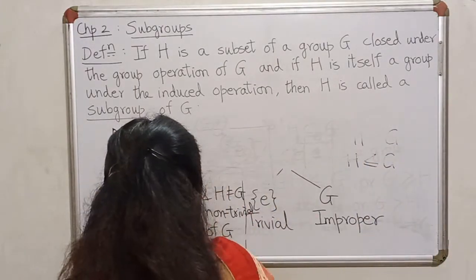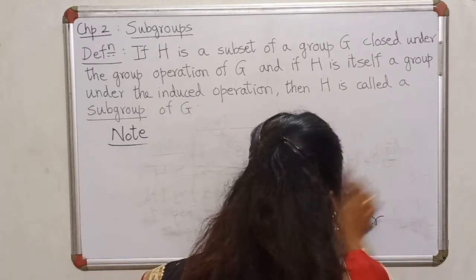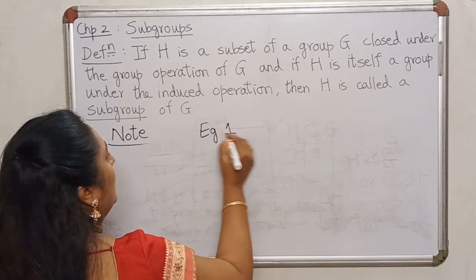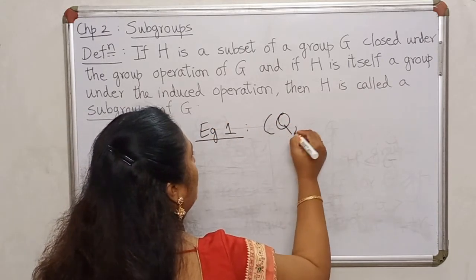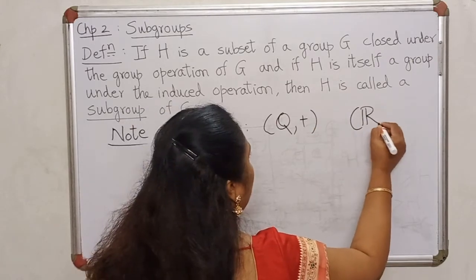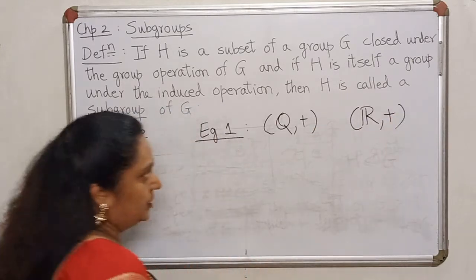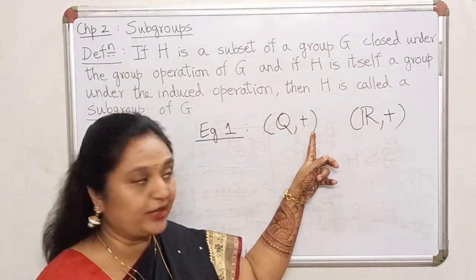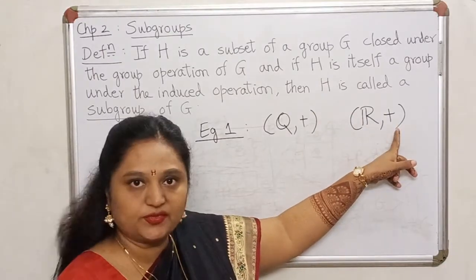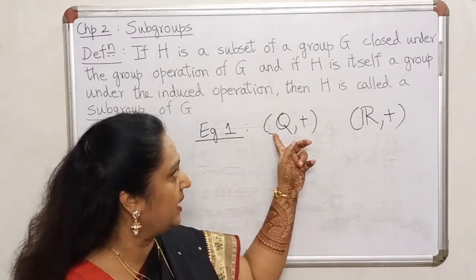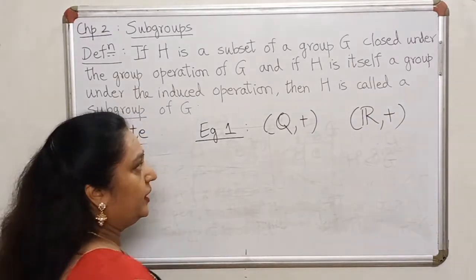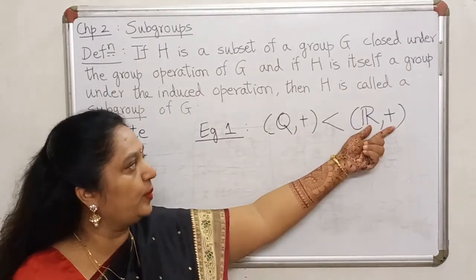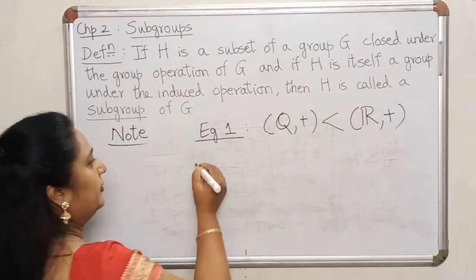Let us quickly look at two examples. Example 1: look at the set of rational numbers with respect to addition, and the set of real numbers with respect to addition. We know both are groups under addition, the operations are the same, and Q is a subset of R. So Q under addition is definitely a subgroup of R under addition — it is a smaller group lying inside the larger one.